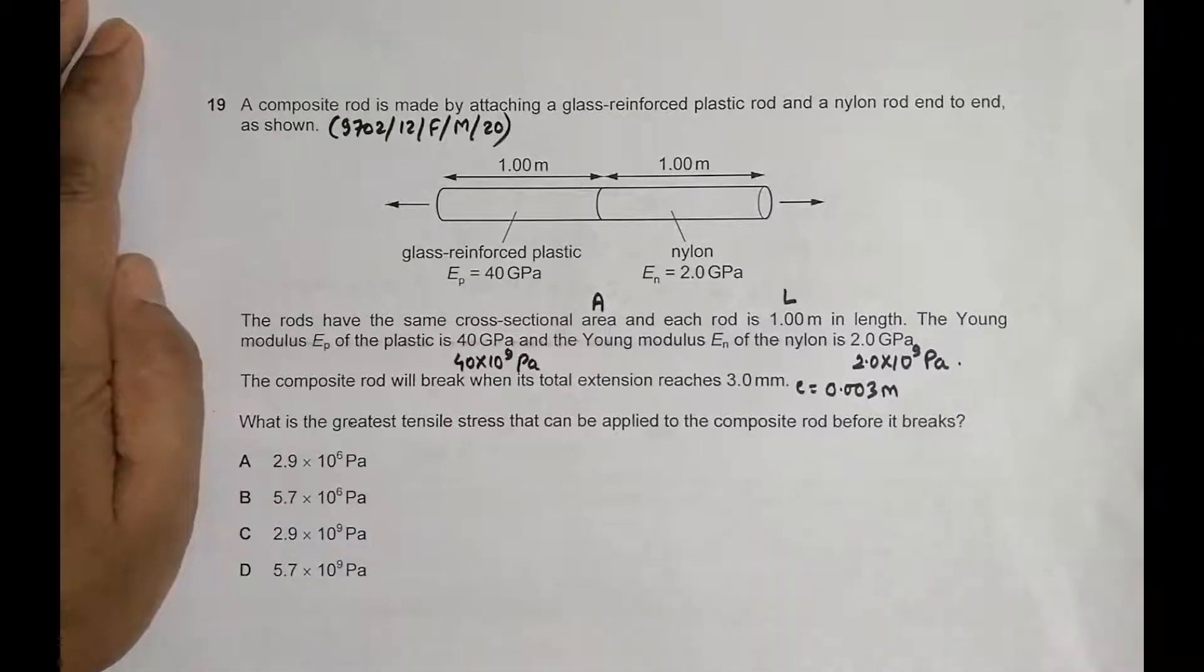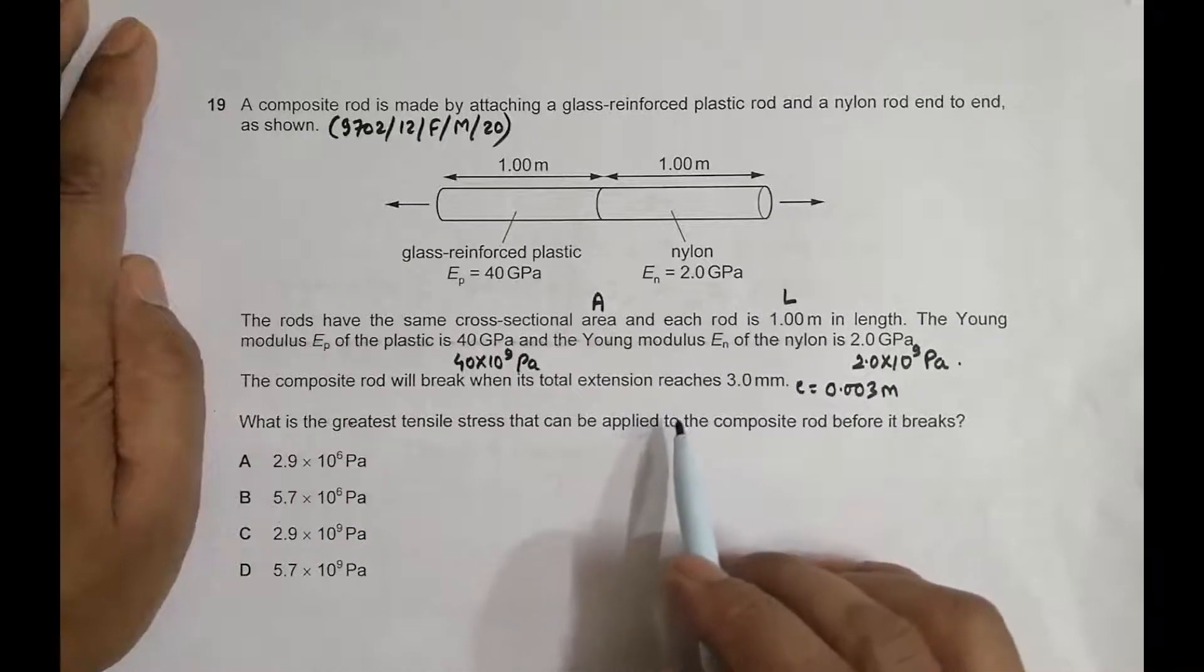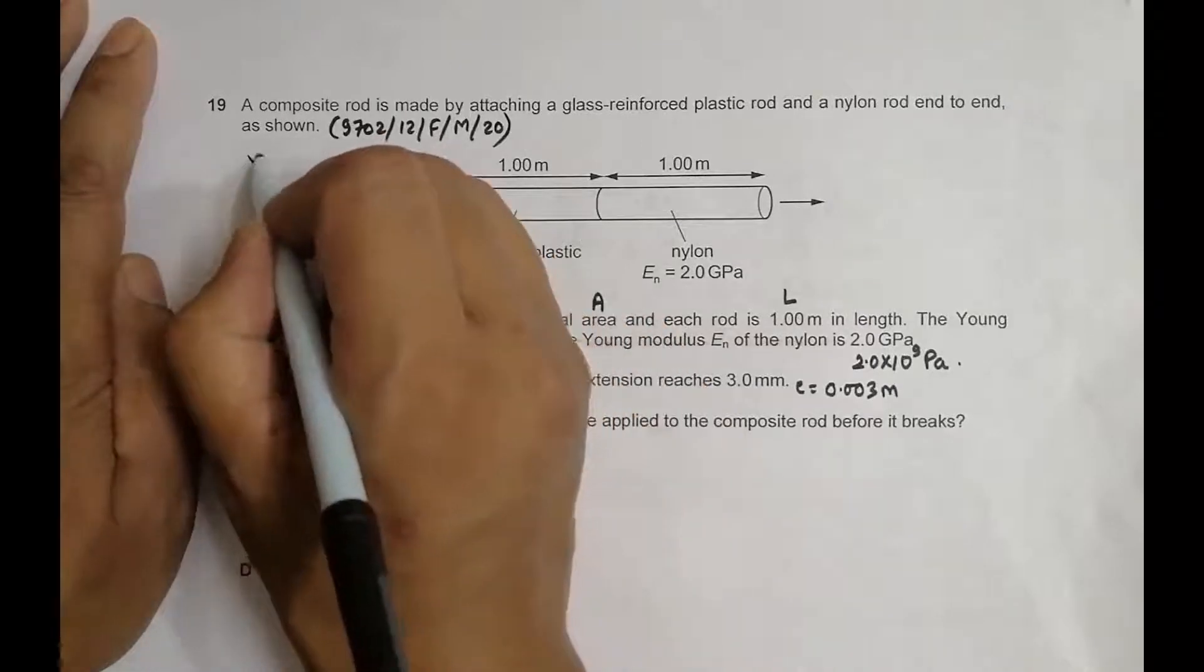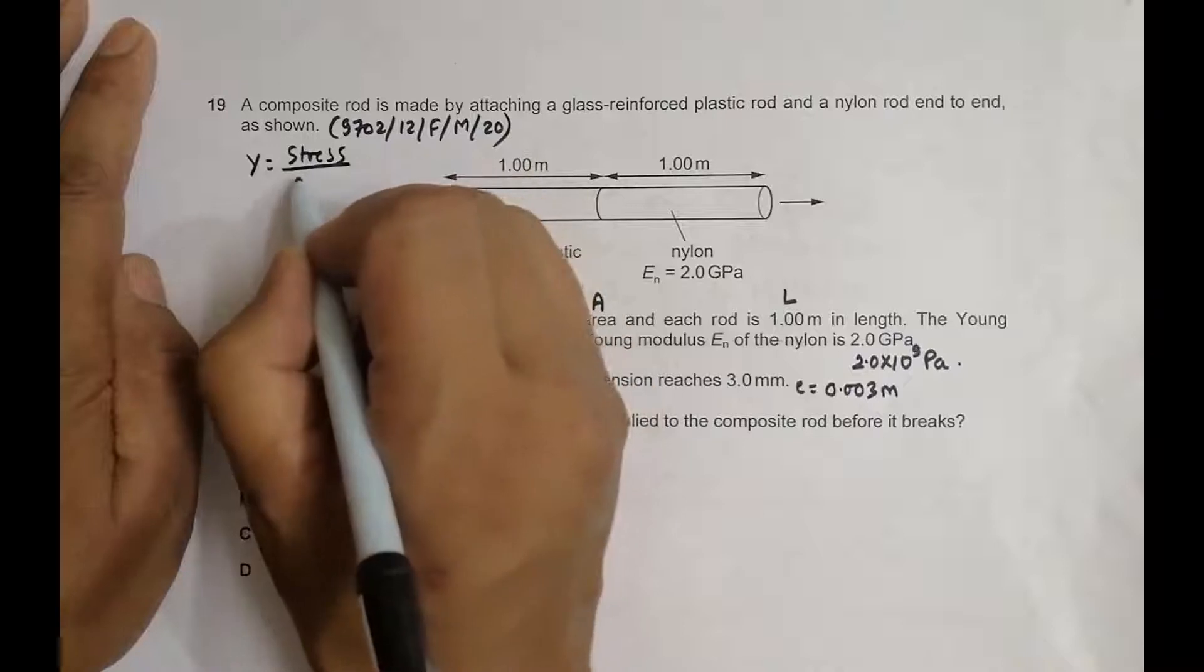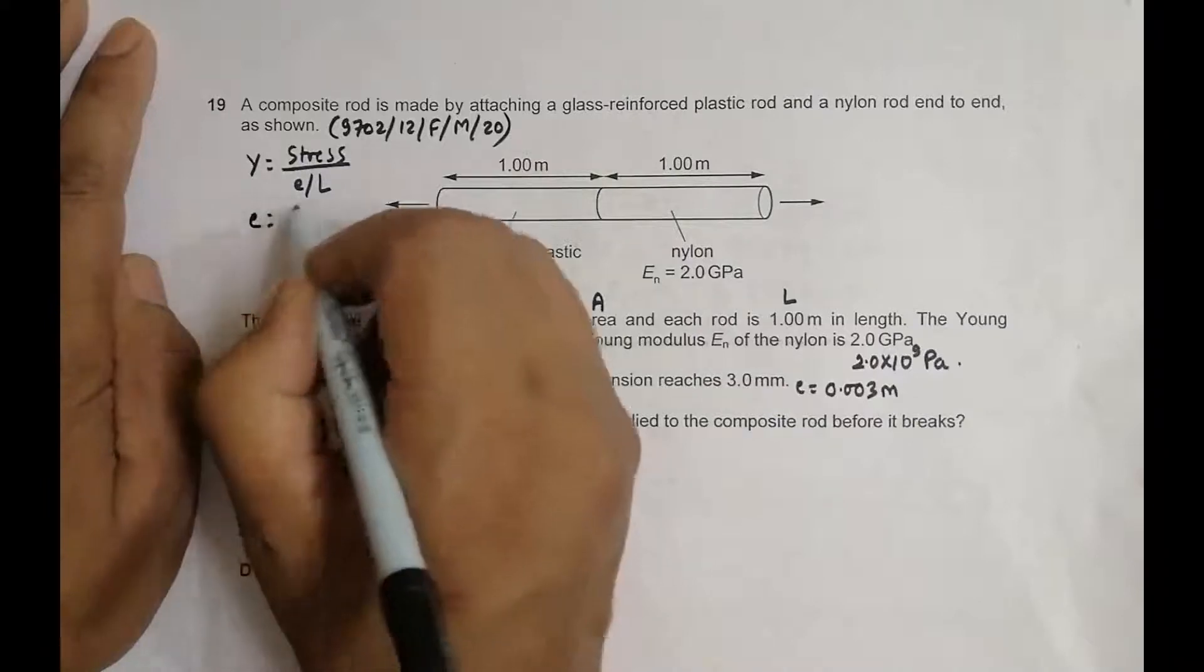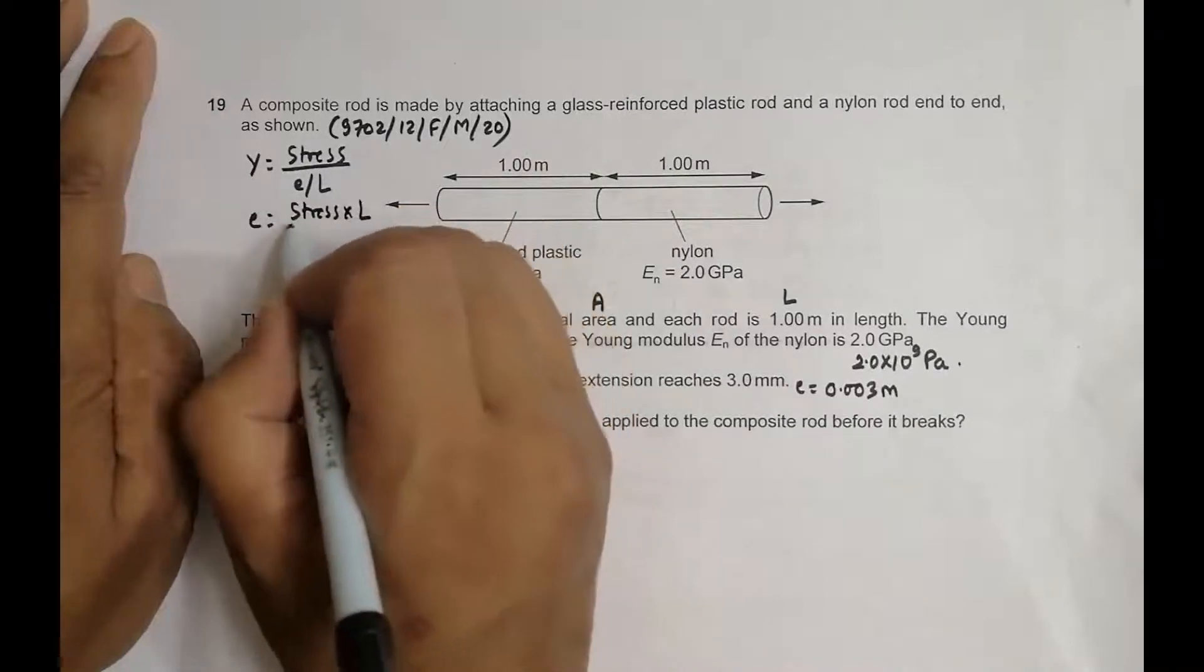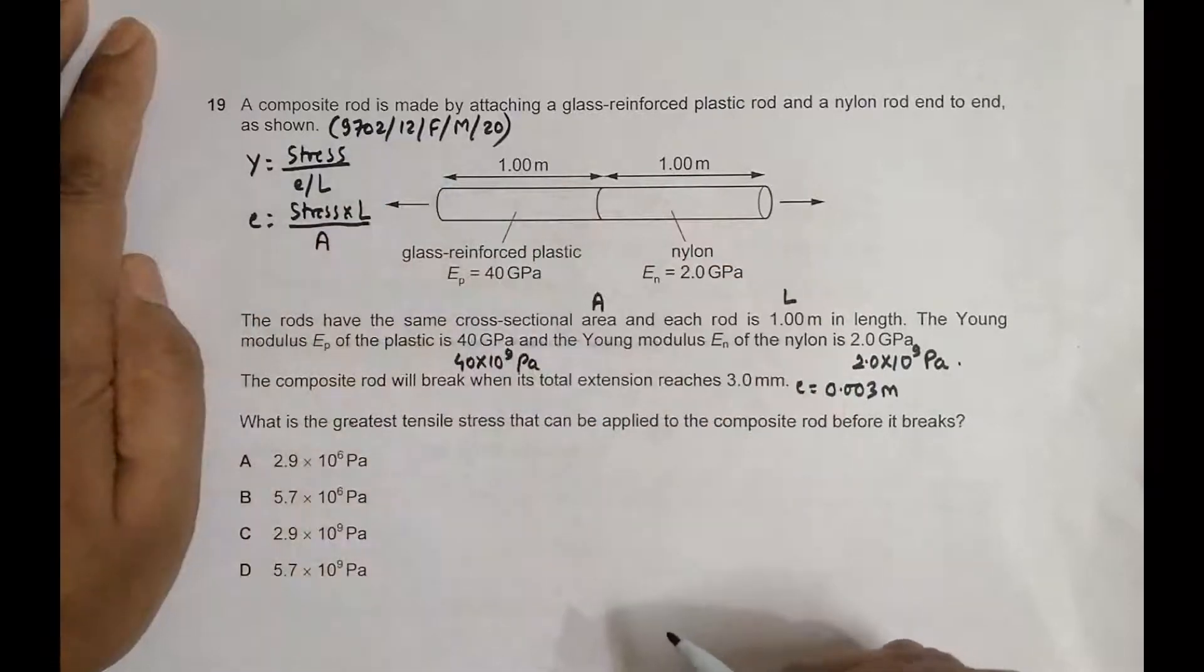Let's use the relation between stress and extension. Young's modulus equals stress divided by strain, where strain equals e/L. So we have Young's modulus equals stress times L divided by A, which gives us e = (stress × L) / (E × A).